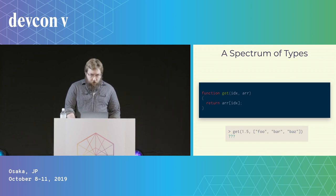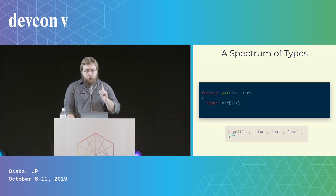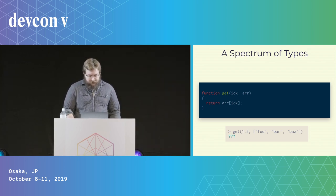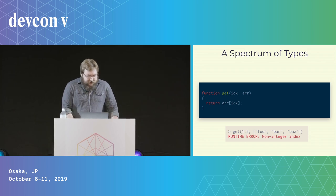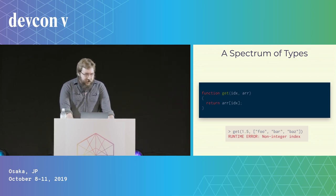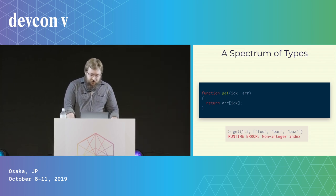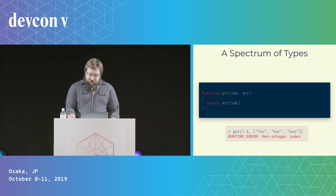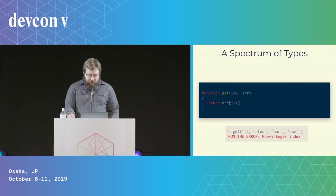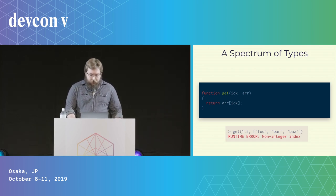Here's a riddle. If get one is 'bar' and get two is 'baz', what's get 1.5? Better question — what should get 1.5 be? A runtime error. Indexing an array with a non-integer makes no sense because an untyped language lets you shoot yourself in the foot and make a bad function call, and this only fails during execution.